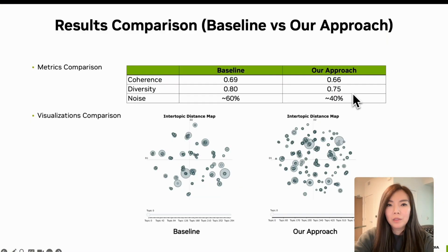Now, we will compare our results. For baseline comparison, we applied the traditional BERTopic modeling and tested it on three principal metrics: coherence, diversity, and noise percentage. Using our approach, we reduced the amount of data being represented as noise from 60% to 40%, which amounts to almost a 20% noise reduction.